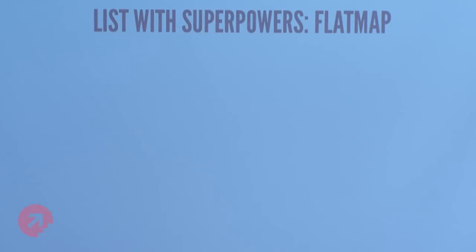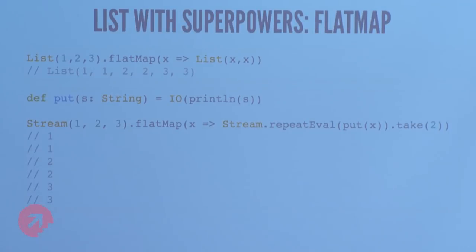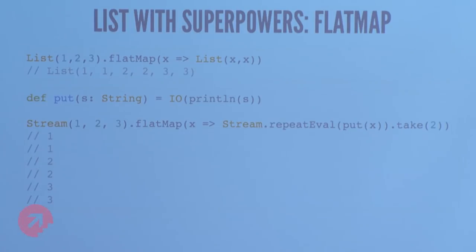Another example is flatMap. On a list, a function operates on each element and produces another list, and you concatenate all the lists. Stream is exactly the same: I've got Stream 1 to 3, flatMap takes a function that operates on each emitted element and produces another stream, and concatenates them with ++. It will emit the first element, produce another stream, run that stream, emit the second element, run the second stream, and so on. In this case I'm printing twice, so you get 1, 1, 2, 2, 3, 3.